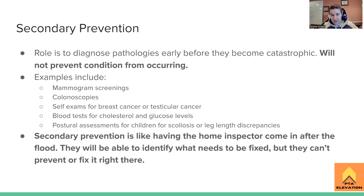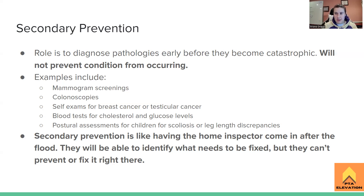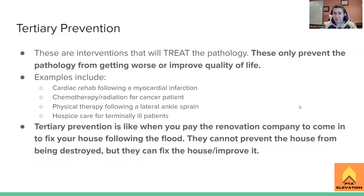Going back to the house analogy: secondary prevention is like having the home inspector come in after a flood. The flood still happened, but you come in afterward and assess what can be fixed. Secondary prevention doesn't prevent the flood from happening — it's about identifying the damage early enough to make sure nothing worse occurs going forward.